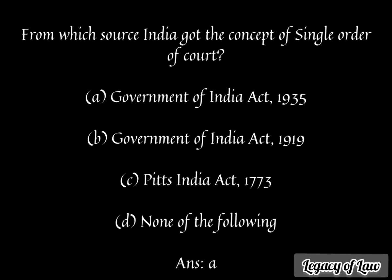The next question is: from which source did India get the concept of Single Integrated Judiciary? There are four options — first is Government of India Act 1935, second is Government of India Act 1919, third is Pitt's India Act 1773, and fourth is none of the following. The answer is A, the Government of India Act 1935.